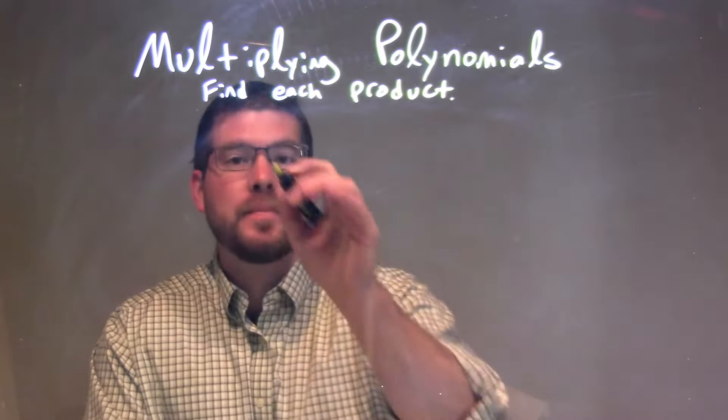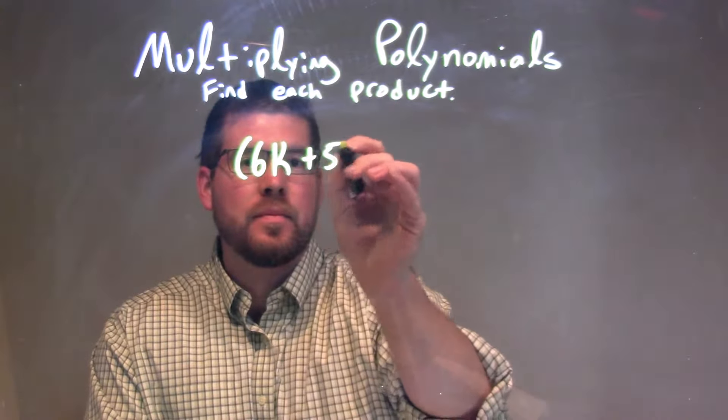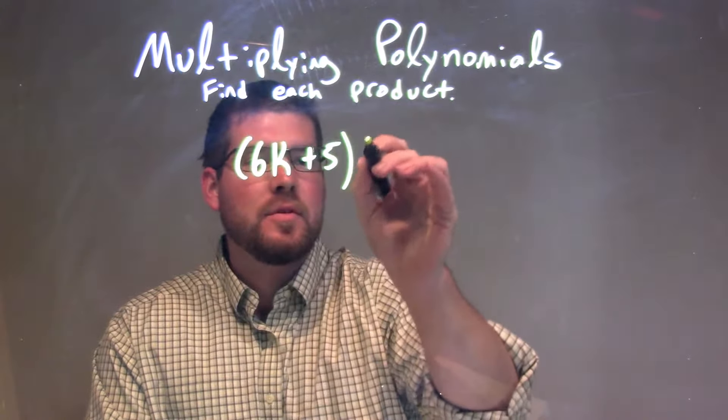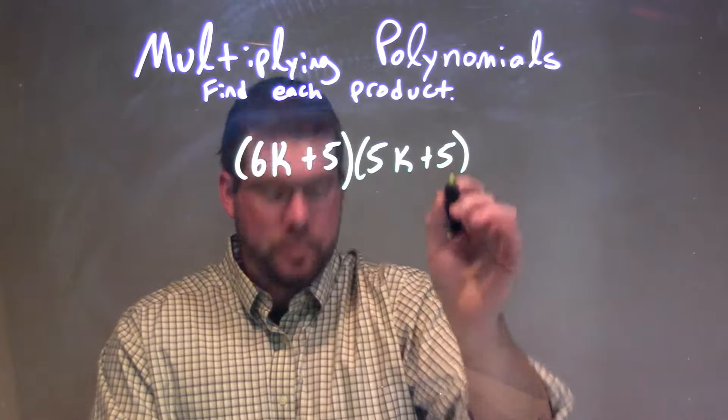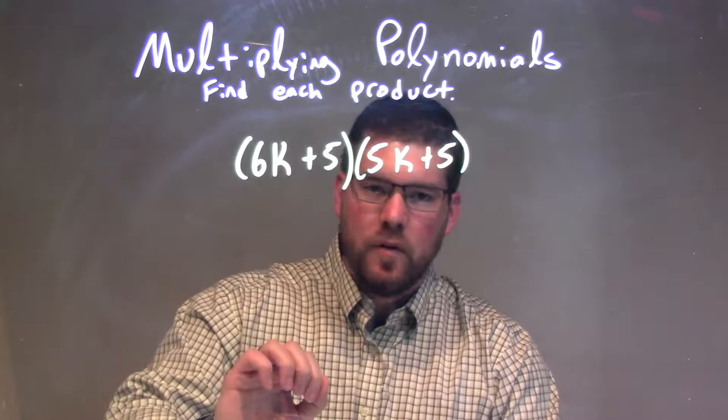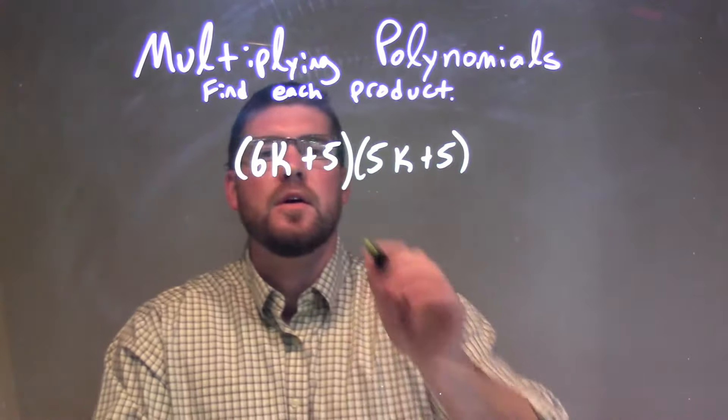So if I was given this problem, 6k plus 5 times 5k plus 5, well, we're going to take all parts of the first parenthesis and multiply by all parts of our second parenthesis. So let's distribute.